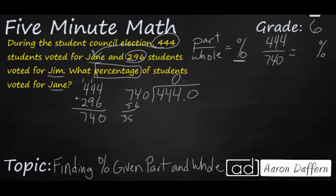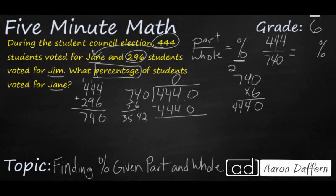And 7 times 6 is going to be 42. So let me try 740 times 6 — I think that's going to get me closer to 4,440. That's going to be 24... 42... 44. Look at that — it goes exactly without any need to do any more division. So 444 divided by 740 equals 0.6, or 6 tenths.